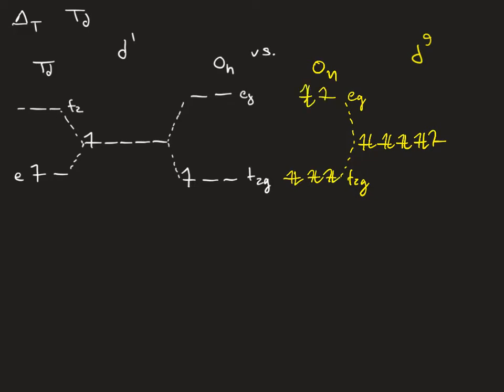With a hole in your EG set, and in TD symmetry, to your T2 and your E orbital. Now you have a hole in your T2 orbitals.